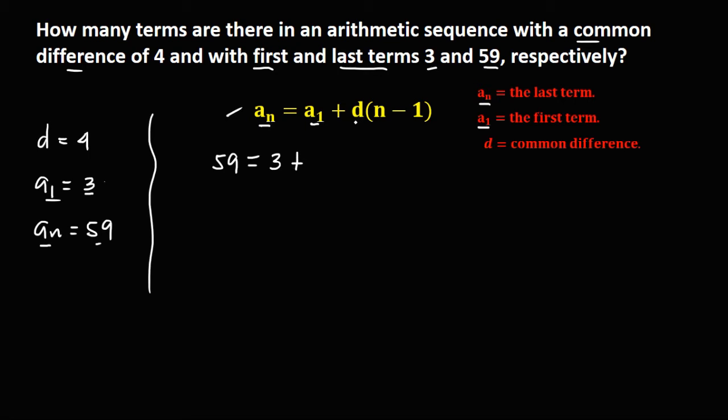Then plus d, that's the common difference, that's 4 times n, this one is the unknown, then minus 1.